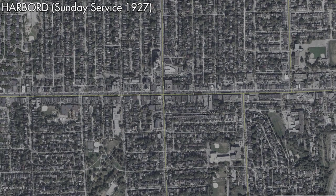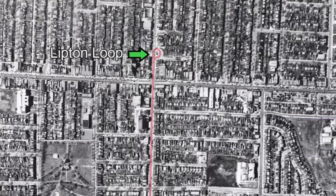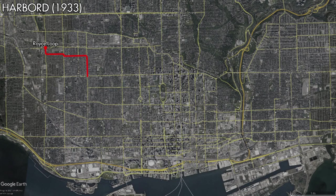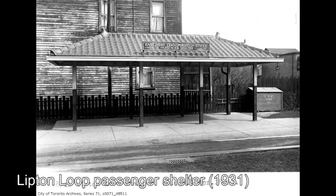This route would be changed once more in 1927, when Sunday service was routed north along Pape Avenue to the newly built Lipton Loop, just north of Danforth Avenue. By 1928, the Harbord Streetcar was providing Sunday service along Dundas Street and Pape Avenue. This routing would become permanent in 1933, with the College Streetcar being abolished and the Harbord Streetcar taking over the eastern end of its route. Service along Adelaide Street, formerly provided by the Harbord Streetcar, would be provided by the Bathurst Streetcar instead.